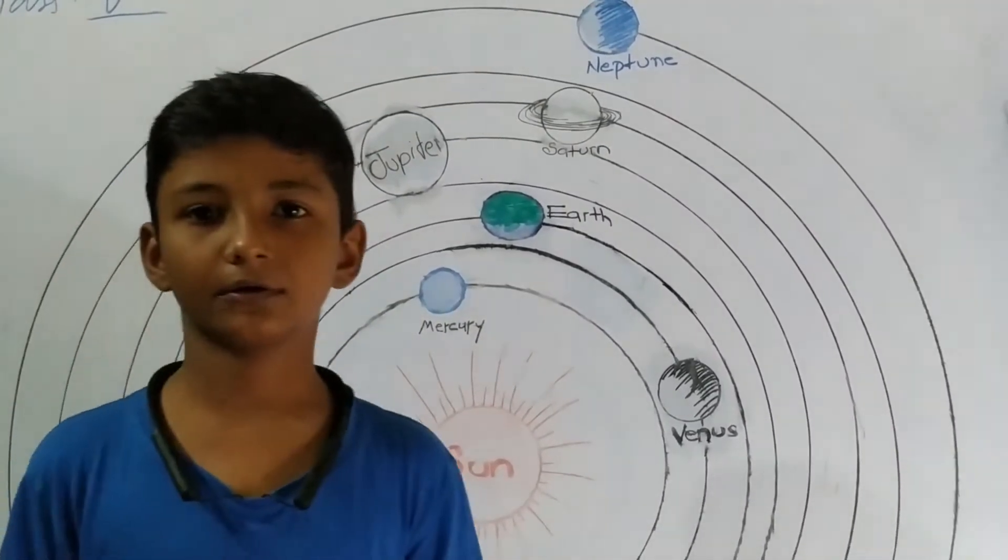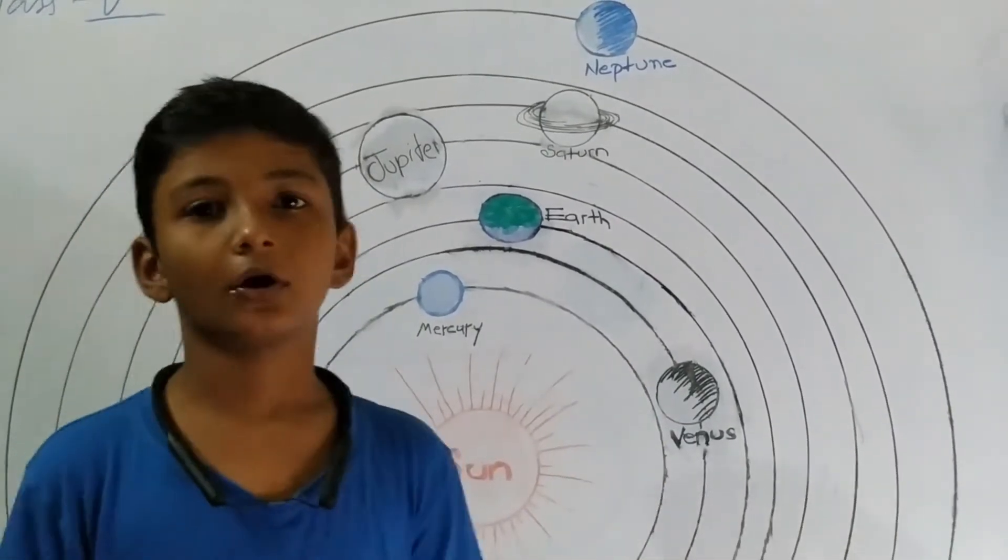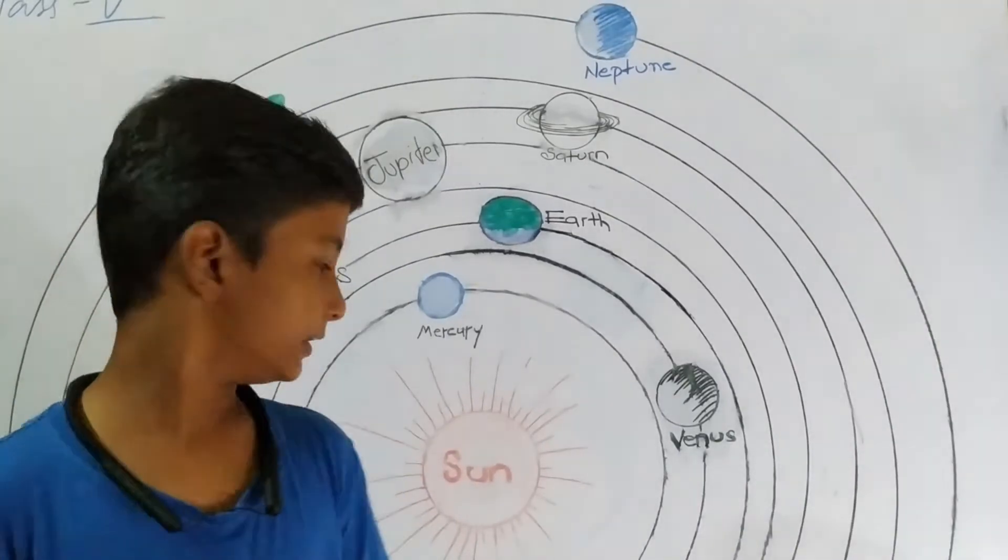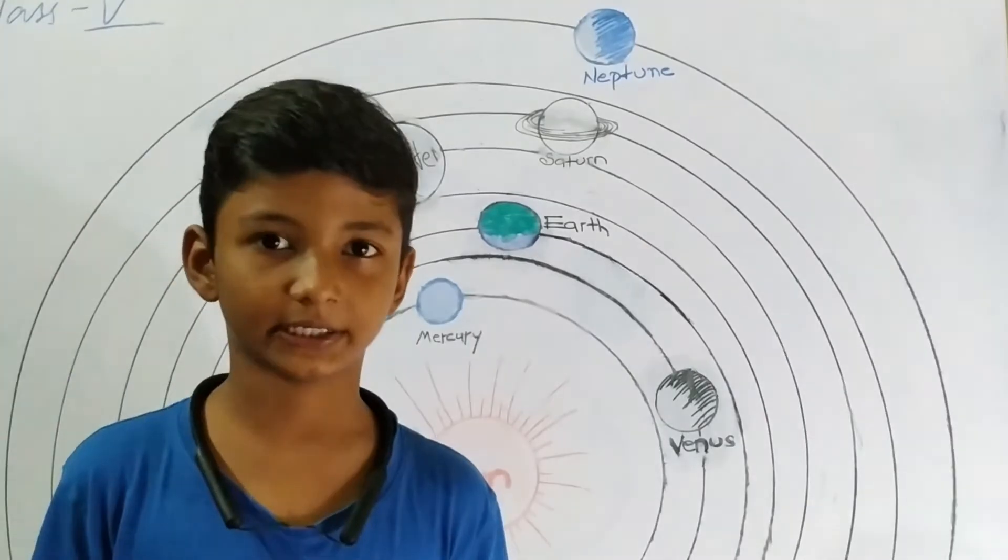Plants make their own food in the presence of sunlight. All animals depend on plants for food, directly and indirectly.